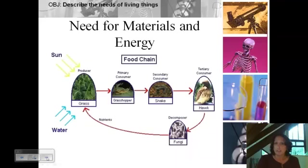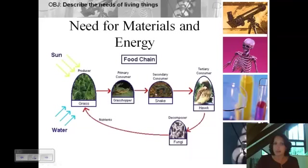Organisms also need materials, nutrients, and energy. Some organisms can make their own nutrients using the sun's energy and water — those would be the producers. This is a little food chain. The grass gets its energy from the sun and its materials from water and carbon dioxide in the air. Then the grasshopper comes along and eats, and so on. The fungi break dead and decaying matter down. But all of these organisms need materials and energy, and we need to constantly have this input of materials and energy.